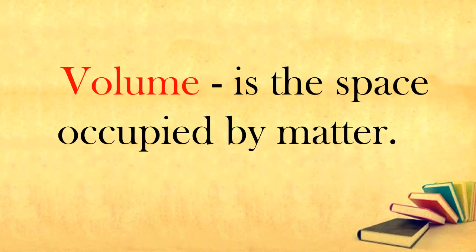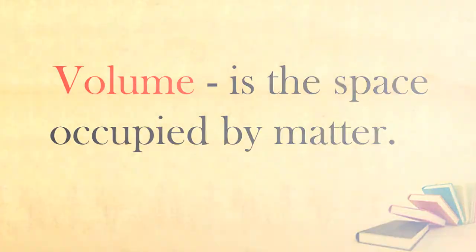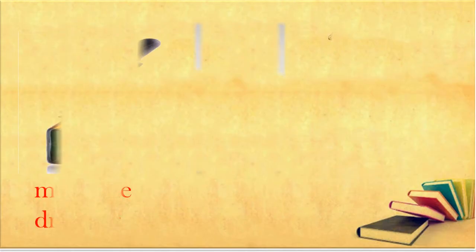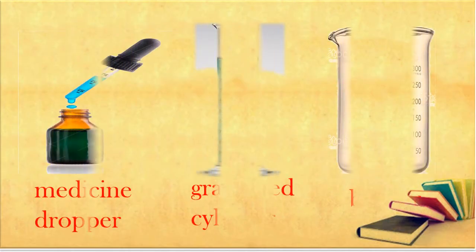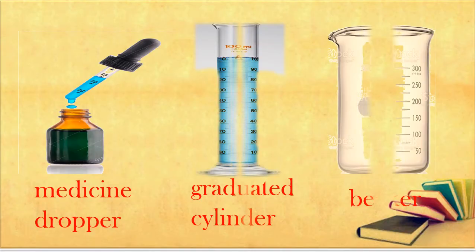Another property common to all matter is volume. Volume is the space occupied by matter. These are some of the tools that are used to measure the volume of liquids: medicine dropper, graduated cylinder, and beaker.